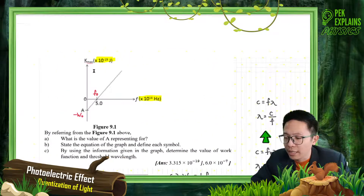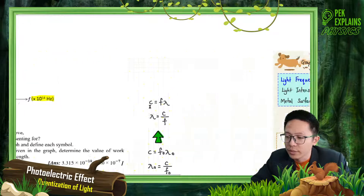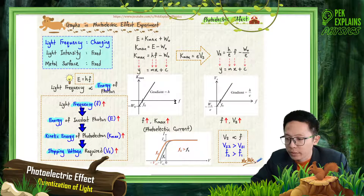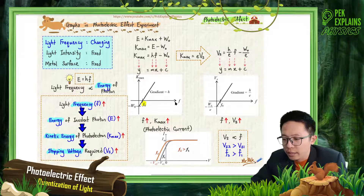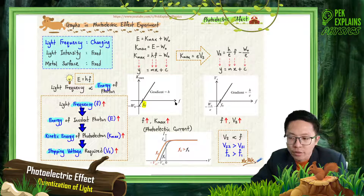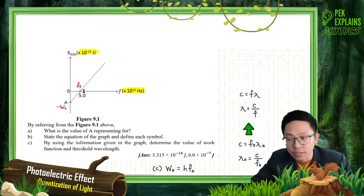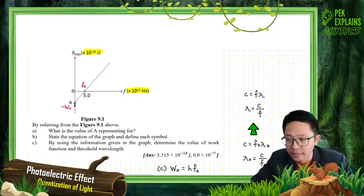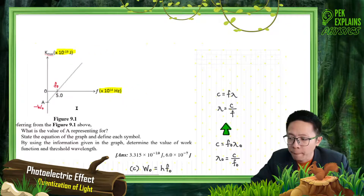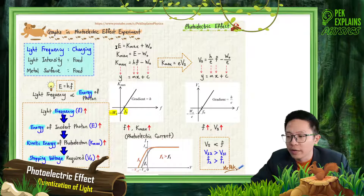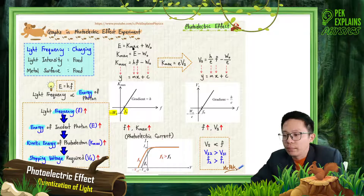About this Kmax versus frequency graph. You will learn about this. The intercept at x is F0 and the intercept at y is negative W0. So it's important to identify what is the x-intercept and y-intercept. How to get that? It's all from derivation from the basic formula: E equal to Kmax plus work function.